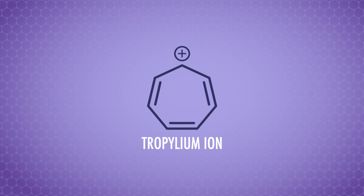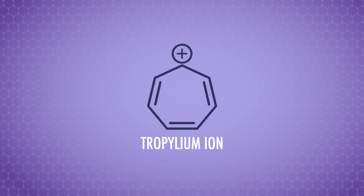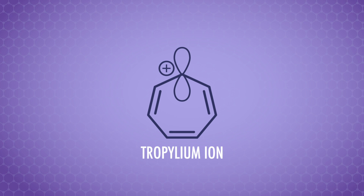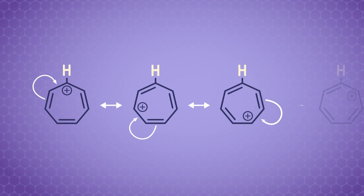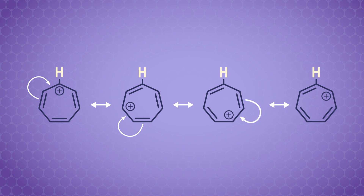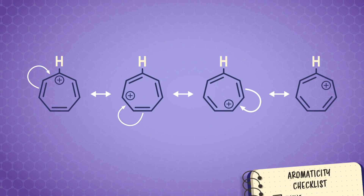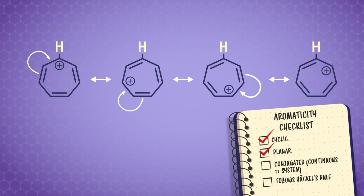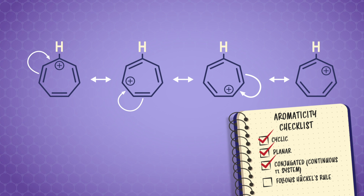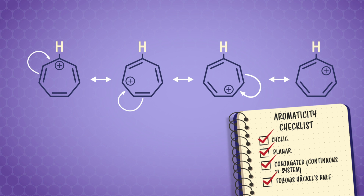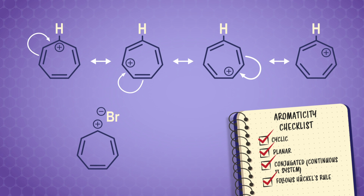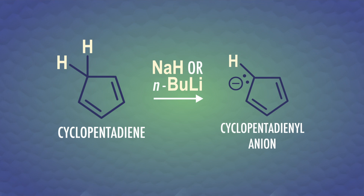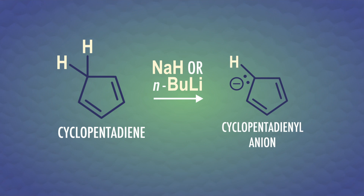Not all aromatic compounds are perfect 6-carbon hexagons. We see aromaticity in certain ions too, like the tropylium cation, a 7-membered ring with a positive charge. It has an empty p-orbital, and since we can draw resonance structures that delocalize the positive charge and the 6 pi electrons around the ring, the pi electron system is continuous. So it's cyclic, planar, conjugated, and with those 6 pi electrons, like benzene, it follows Huckel's rule — it's aromatic. Tropylium salts, such as tropylium bromide, are remarkably stable.